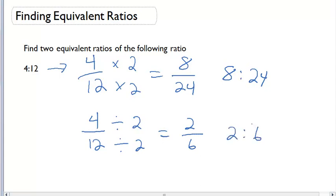Notice that in all of these ratios, the second number is 3 times larger than the first number. As long as that relationship stays intact, we'll have equivalent ratios.